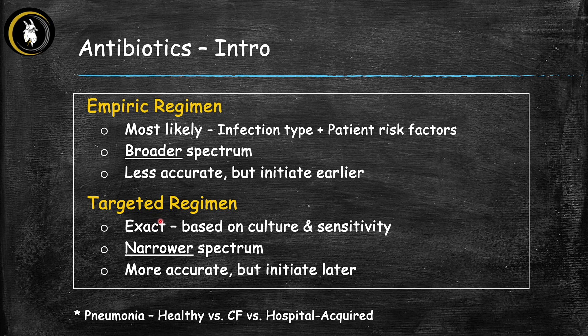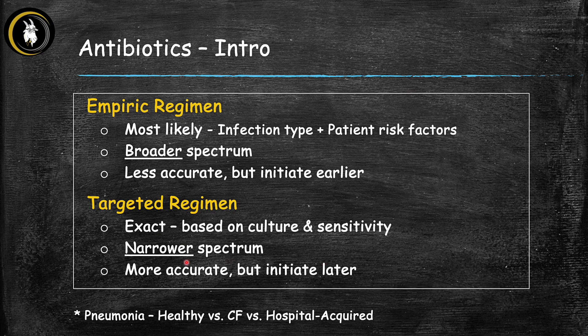Targeted regimen is exact — based on what the actual bacteria is, usually determined by culturing the bacteria in the lab and running sensitivity tests against different antibiotics. They tell us, for example, that it's Staph aureus, sensitive to these antibiotics and resistant to these ones. The benefit is we can choose narrower spectrum antibiotics, which is more accurate. In clinical practice, we often start with an empiric regimen and then modify it to a targeted regimen once culture and sensitivity results come back.